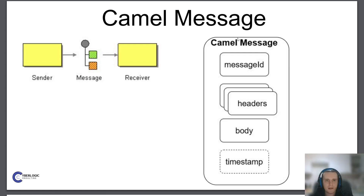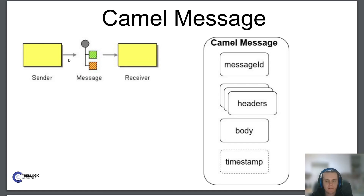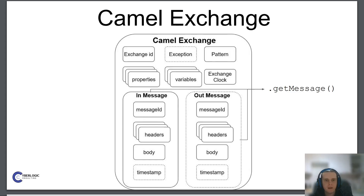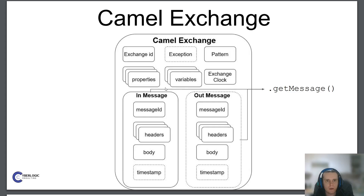We will learn how to work with Camel messages in following videos. For now, remember that Camel messages flow through Camel routes and consist of message ID, headers, body, and optionally a timestamp. Messages do not flow through routes by themselves — they are contained within Camel exchanges. Exchanges represent a request and optionally a response message, or an exception that happened during processing. When just beginning with Camel, you can think of an exchange as a container for a message and some metadata flowing through a Camel route.